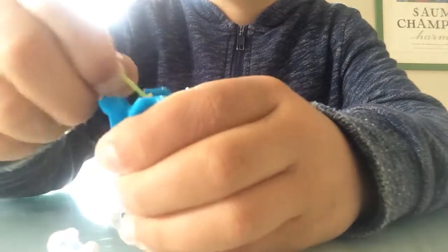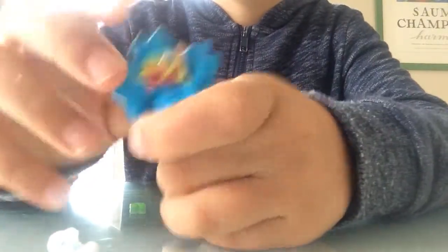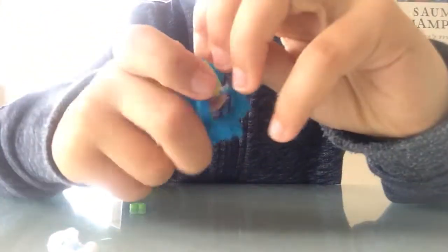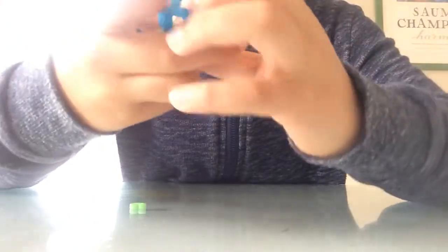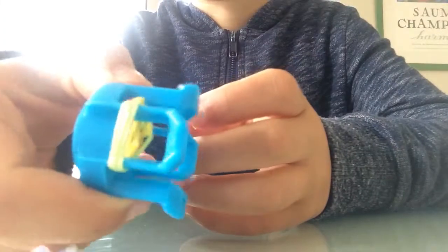Then you want to take the ones on the side and bring them onto the hook in the middle. So you'll have three like that.